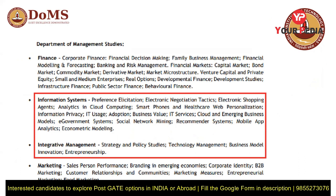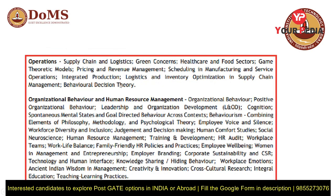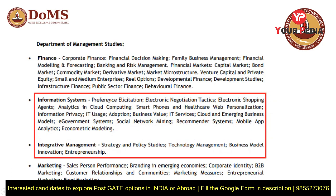Normally, engineering graduates writing GATE should not go for finance and marketing as they typically don't have a background for that. The four areas you can choose from are: Information Systems, Integrative Management, Operations, and Organizational Behavior and Human Resource Management. For Information Systems, topics include cloud computing, smartphone web personalization, information security, information privacy, IT usage, and IT services — areas familiar to CS or electronics graduates.